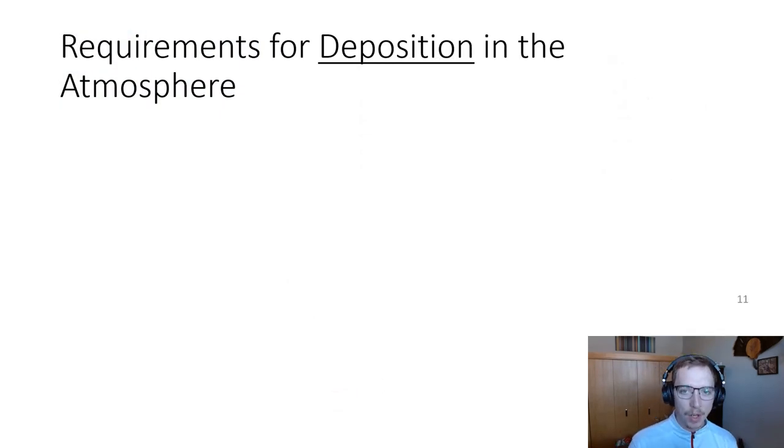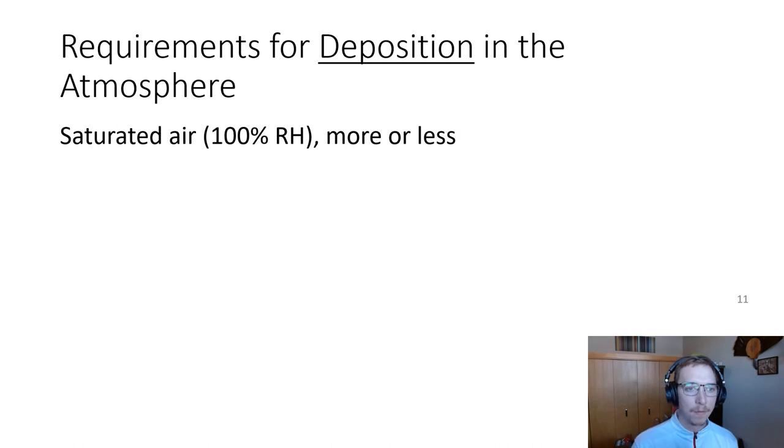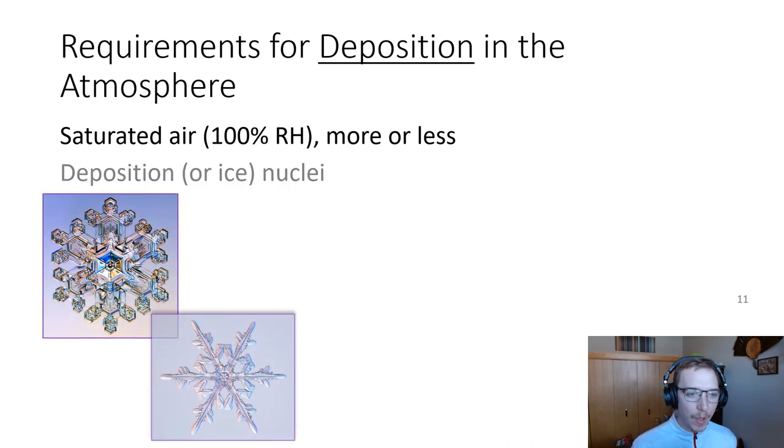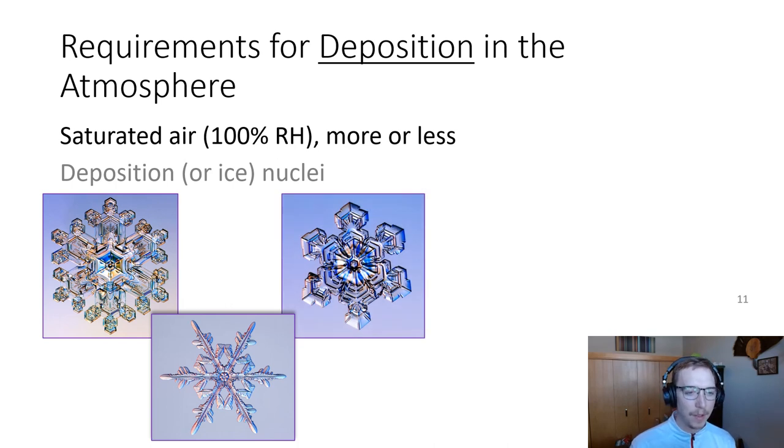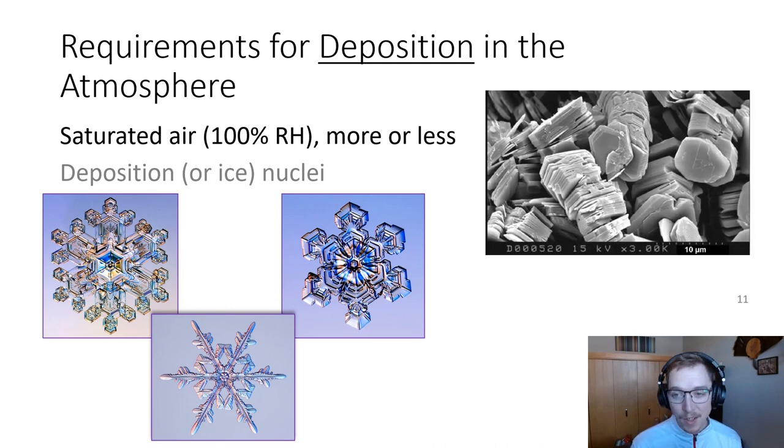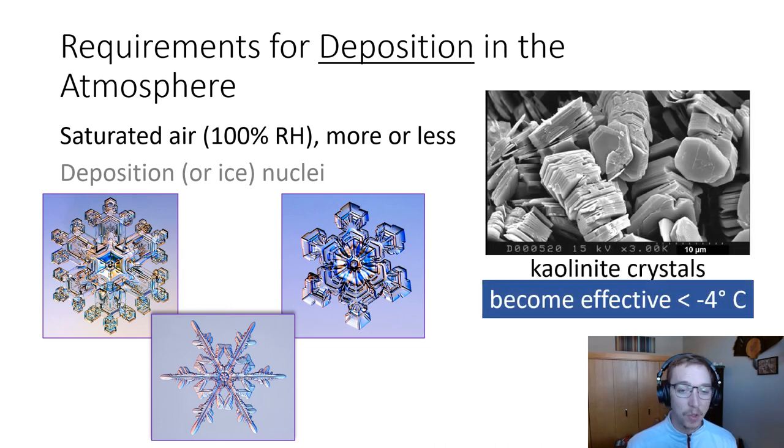Requirements for deposition in the atmosphere. You need saturated air and a deposition or ice nuclei. So, a little bit different than water. You need some type of nuclei to form and start to freeze on and then you get this crystalline lattice work that you see as a snowflake. Things like clay or kaolinite crystals serve as a really good source of that type of deposition nuclei.